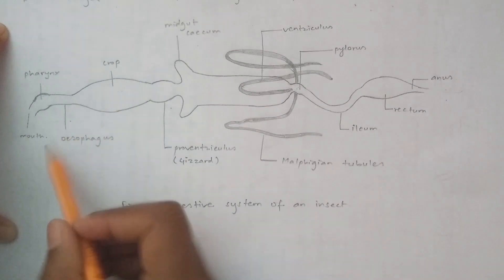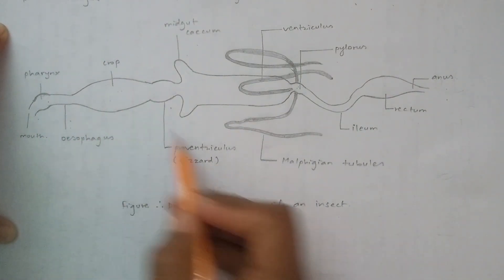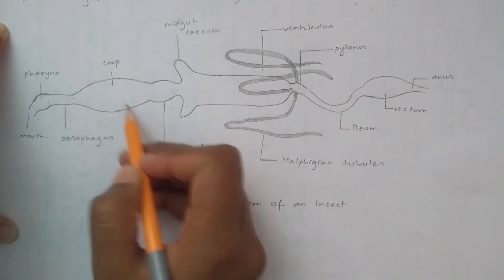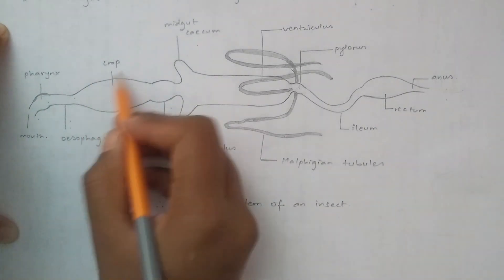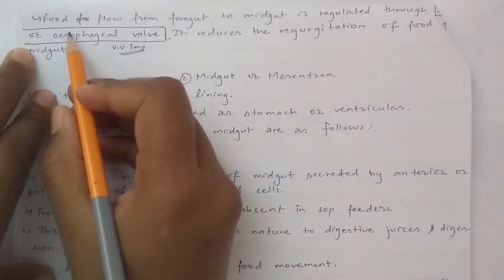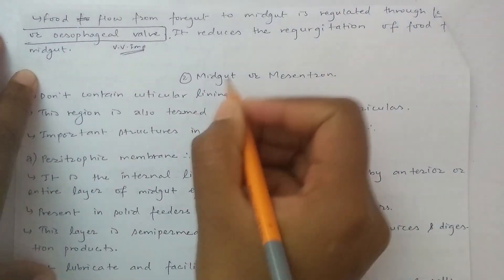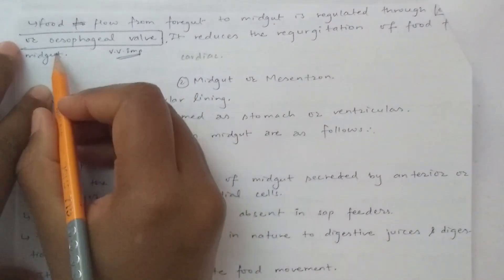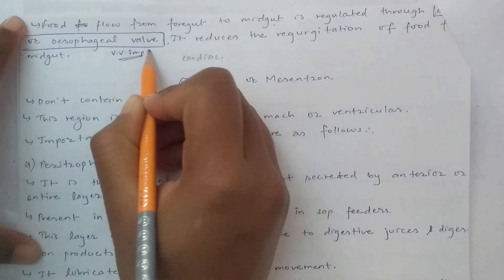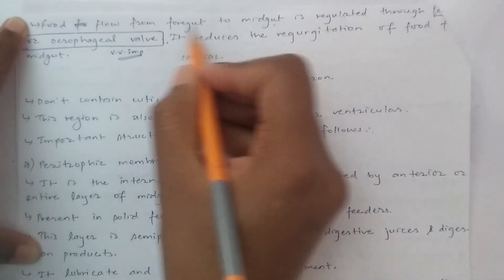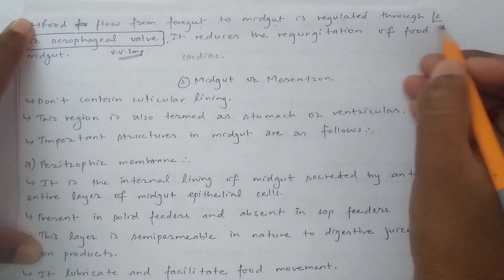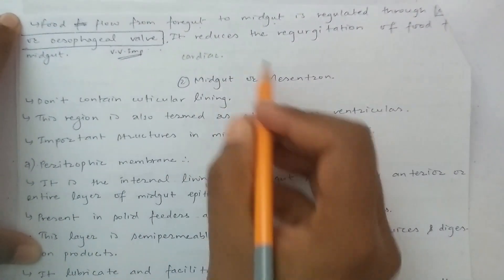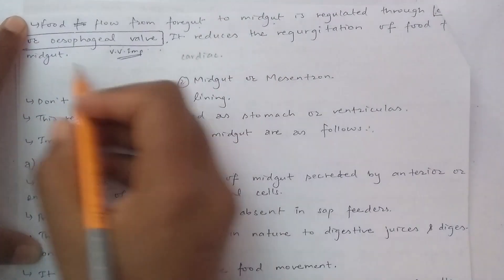The foregut diagram shows mouth, pharynx, esophagus, crop, and gizzard. The crop is a dilated portion used for food storage. Food flow from foregut to midgut is regulated through the cardiac valve, also called the esophageal valve. The cardiac valve reduces regurgitation of food from midgut.